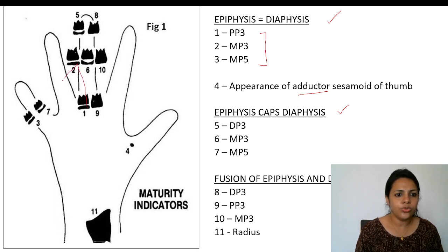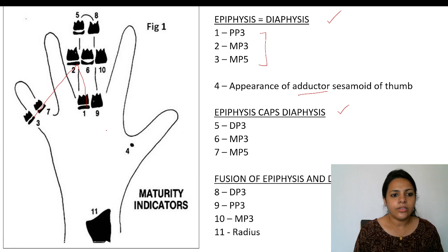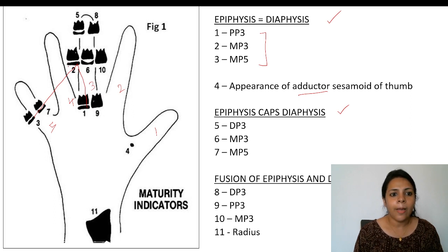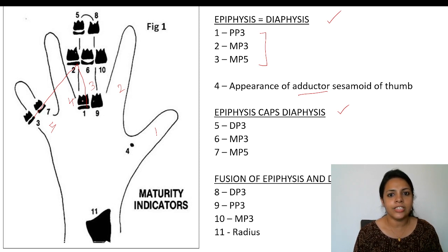First, we need to know the numbering of the fingers: thumb is 1, index is 2, middle finger is 3, ring finger is 4, and the little finger is 5. The first indicator is PP3 — proximal phalanx of the third finger. The second is MP3 — middle phalanx of the third finger. The third is MP5 — middle phalanx of the fifth finger. These are the first three stages where the epiphysis is equal to the diaphysis.